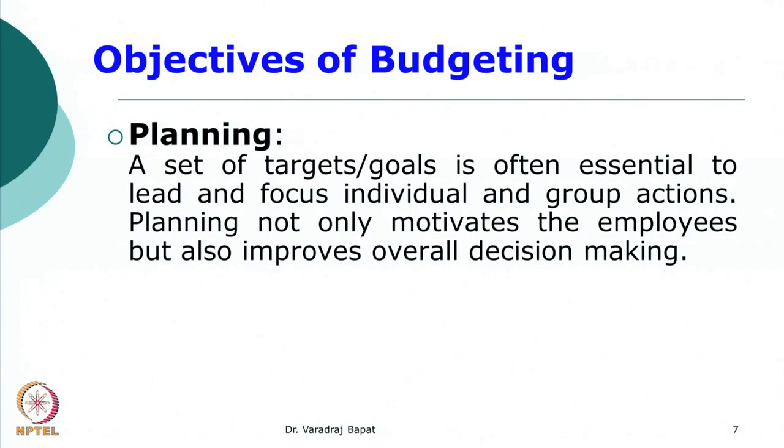The objectives of budget: the first and primary objective is planning. Because budget is essentially a plan — a set of targets or goals — which is often essential to lead and focus individual and group actions. As long as goals are not set correctly, our actions are not focused in that direction. Budget ensures a period is defined, the goal is defined, and it is put down in quantitative terms. Planning not only motivates employees, it also improves overall decision making. So the planning process is substantially improved if it is part of budgeting.